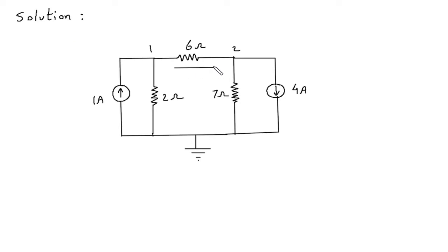Let's say this is current I1, this is current I2 and this is current I3. All the currents are towards the reference node.